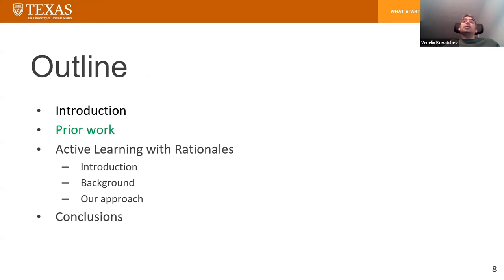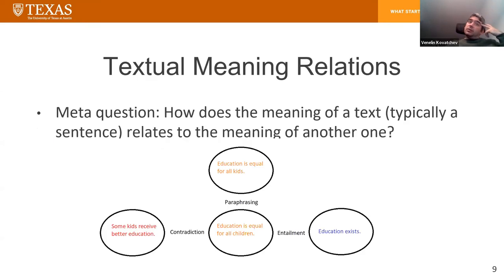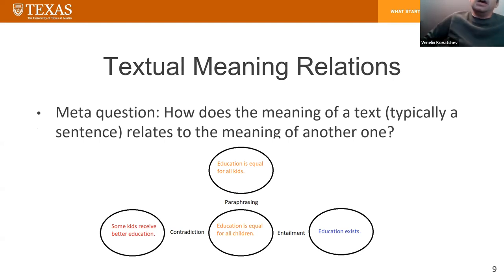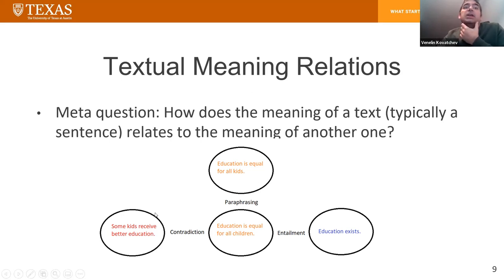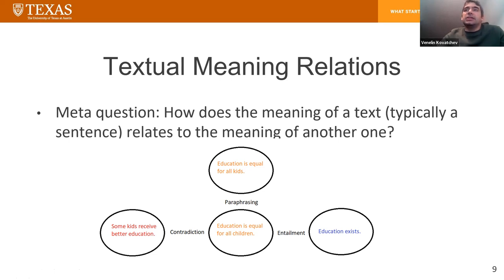Now I'll mention some prior work from my PhD and previous postdoc. During my PhD, I was mostly concerned with textual meaning relations. The core question is: how does the meaning of one text or sentence relate to the meaning of another? For example, focusing on the sentence 'education is equal for all children,' we can compare it with 'education is equal for all kids,' 'some kids receive better education,' and 'education exists.' Paraphrasing is when two sentences have approximately the same meaning — the first two examples are paraphrases.